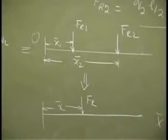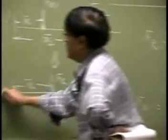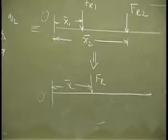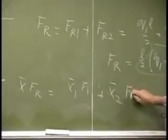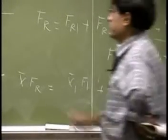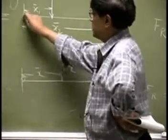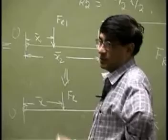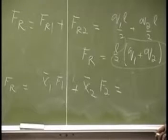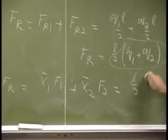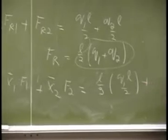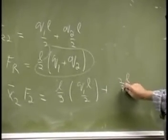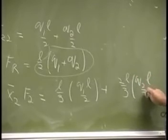The next thing you need is X bar. So, you have X bar times FR. That is the moment about point O. And that is going to be X1 bar F1 plus X2 bar F2. If these two are equivalent, the moment about this point for this system as well as this system should be the same.